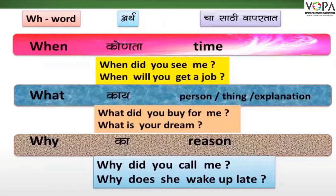Now, let's see examples. WH words are used to ask about time, place, reason, or a person. For example: WHEN WILL YOU GET A JOB?